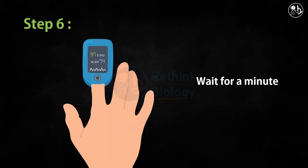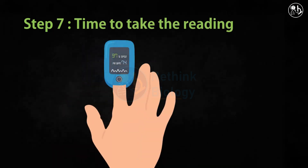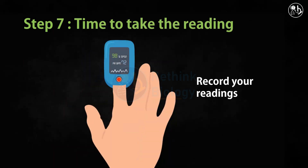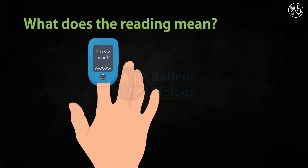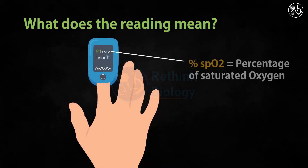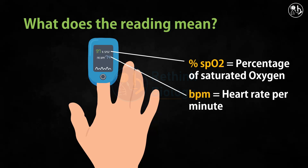Now it's time to record your readings. The reading has two parts: one showing the percentage of SpO2, that is the oxygen saturation, and the other reading shows the heartbeat per minute, denoted as BPM.